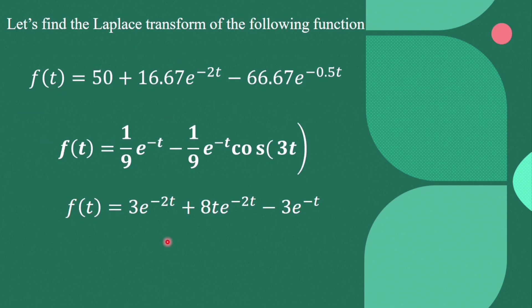Here we take three different types of functions. The first function is f(t) = 50 + 16.67·e^(-2t) − 66.67·e^(-0.5t). The second and third functions are also defined. So let's go to the MATLAB environment software.